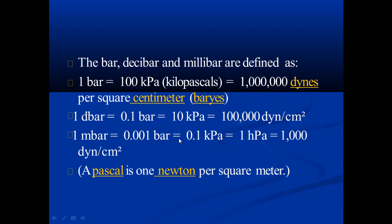The bar, decibar, and millibar are defined as: one bar equals 100 kPa; one decibar equals 0.1 bar, which is 10 kPa or 1,000,000 dynes per square centimeter; one millibar equals 0.001 bar, which is 0.1 kPa or 1,000 dynes per square centimeter. A Pascal is one Newton per square meter — a pressure unit from fluid mechanics.